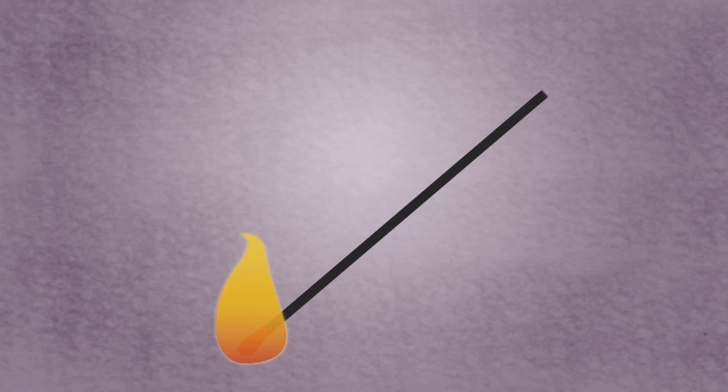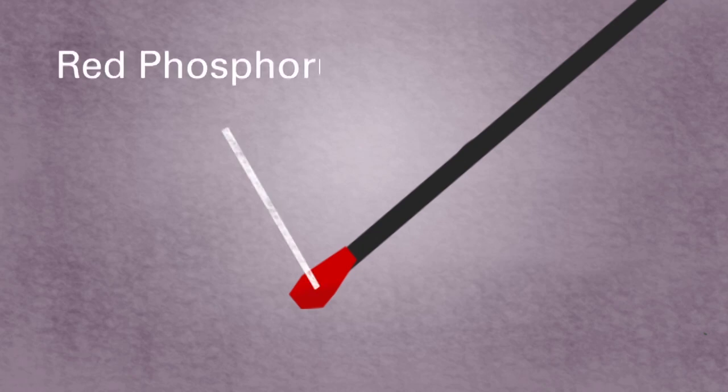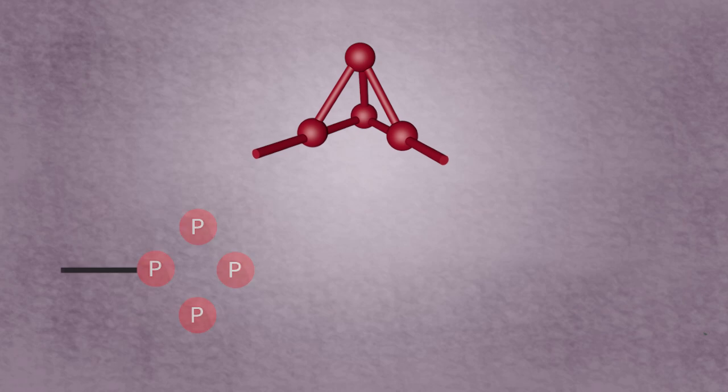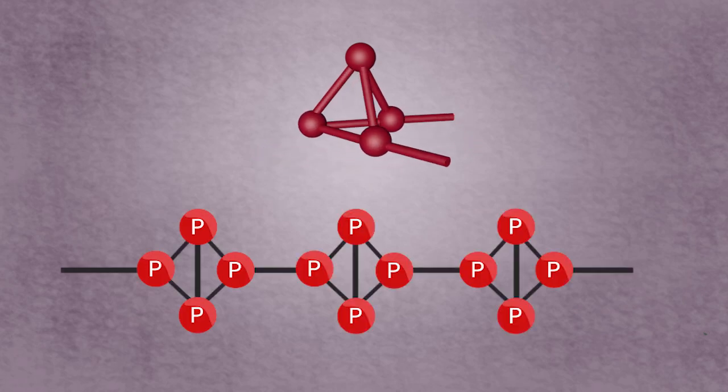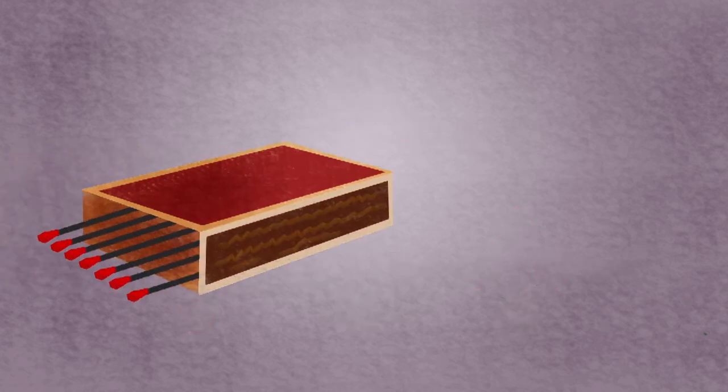The next time you strike a match, have a look at the match head. The match head is usually red. This is due to the presence of red phosphorus, an allotrope of phosphorus. The phosphorus atoms in red phosphorus are linked in a polymeric chain. Matches made of red phosphorus are known as safety matches. In order to ignite, it must be struck against the striking surface on the outside of the package.